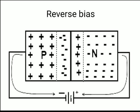In reverse bias, holes are connected to the negative terminal and electrons to the positive terminal. Holes are attracted toward the negative terminal of the battery and electrons are attracted toward the positive terminal. As a result, both carriers move away from the junction, causing the width of the depletion wall to increase. The wall never collapses, so no significant current flows.